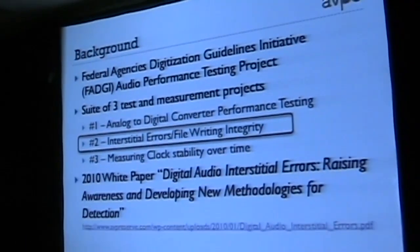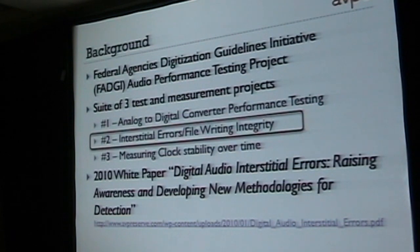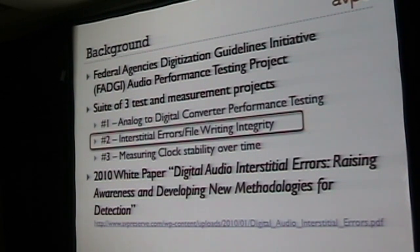I'm here to tell you today about this interesting project we've been working on for just over a year or so now. It comes out of a project originally started by a group called the Federal Agencies Digitization Guidelines Initiative — a group consisting of federal agencies including the Library of Congress, National Archives, Smithsonian, and many many others. We started to investigate performance testing of audio systems. There were three tests we looked at: one on performance testing of analog to digital converters, one on interstitial errors — what I'll be talking about today — and a third one we ultimately decided not to pursue.